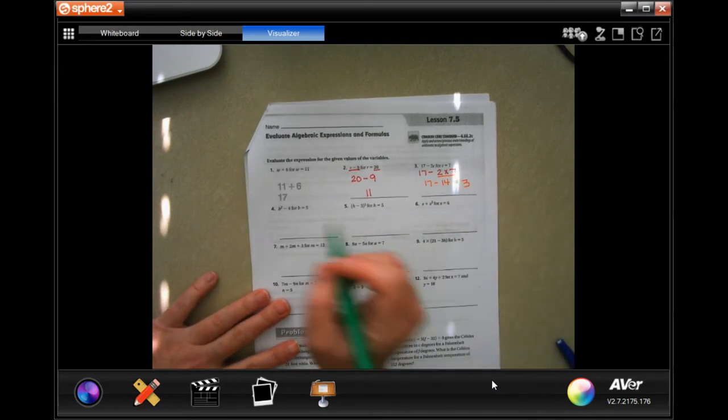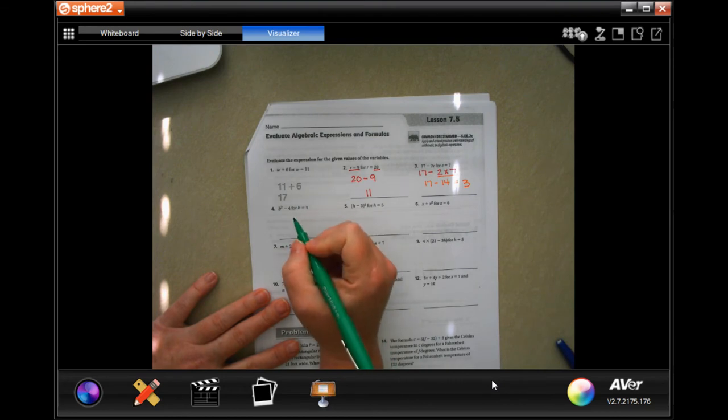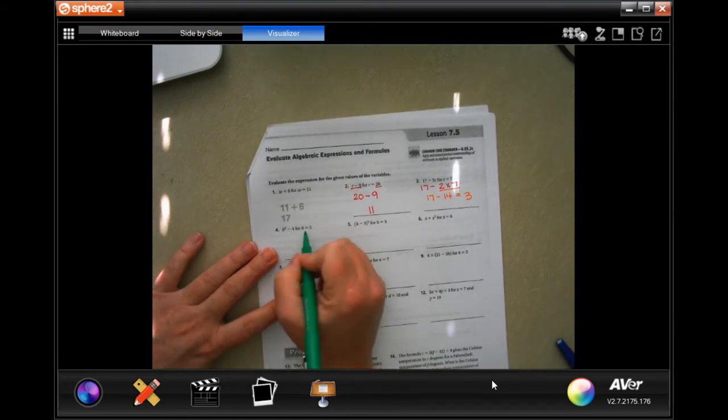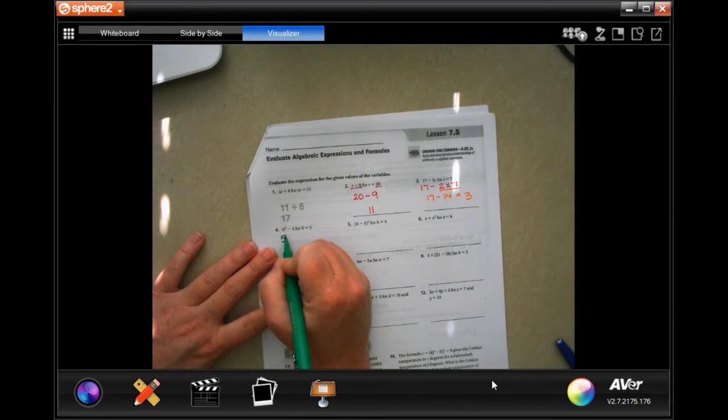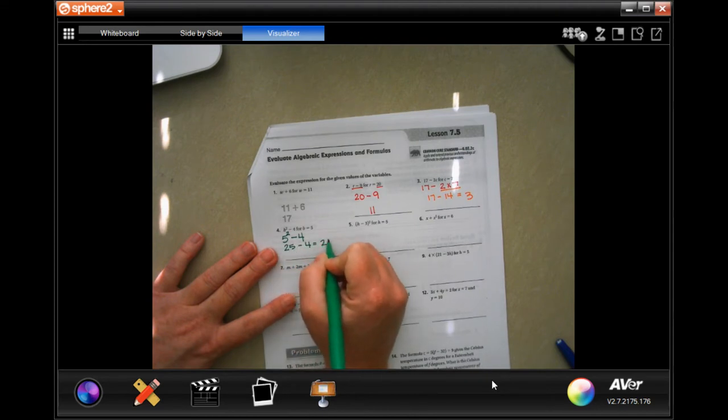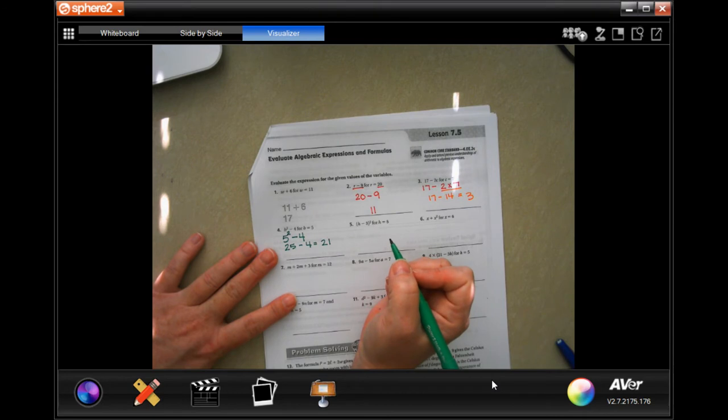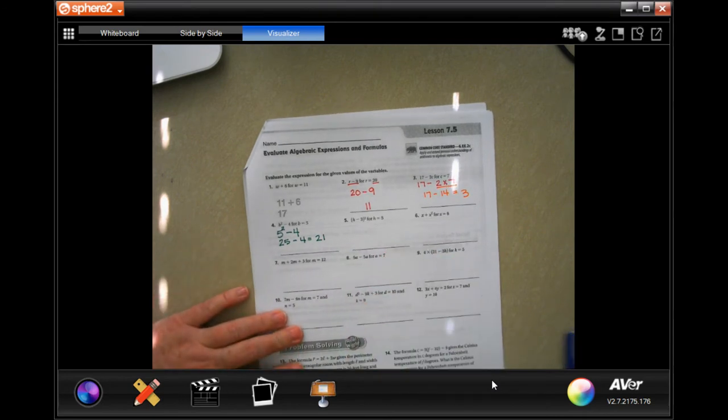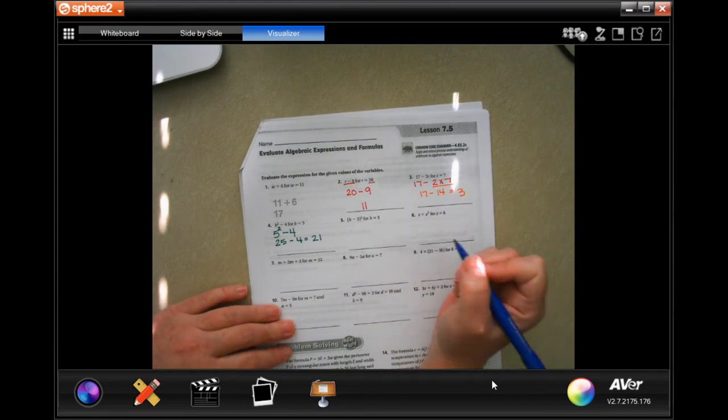This one has an exponent. It's going to be fun, right? So 5 squared minus 4. It tells us B is 5. So I filled in 5 where it said B. Well, 5 squared is 25, and if I subtract 4, I get 21. You're going to be okay, guys. I promise.